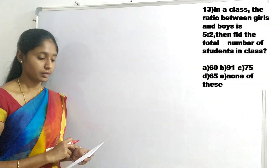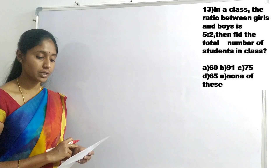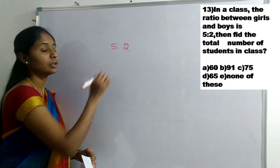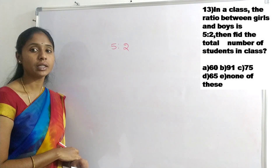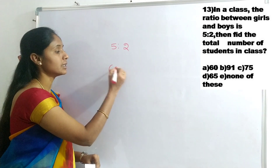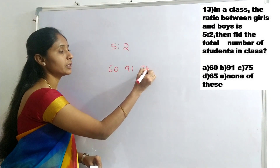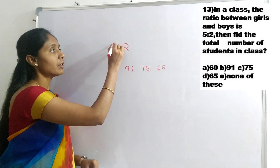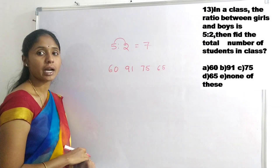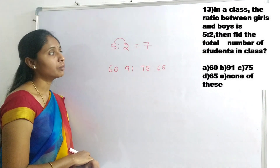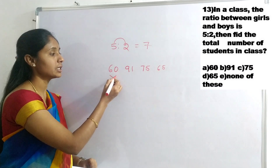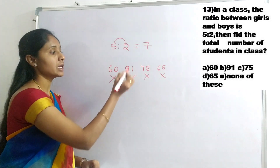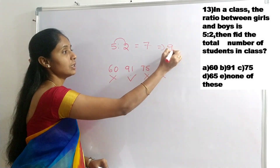Next question: In a class, ratio between girls and boys is 5:2. Find the total number of students. From options: 60, 91, 75, 65. Total must be a multiple of 5+2 = 7. Among the options, only 91 is a multiple of 7. So total number of students in the class is 91.